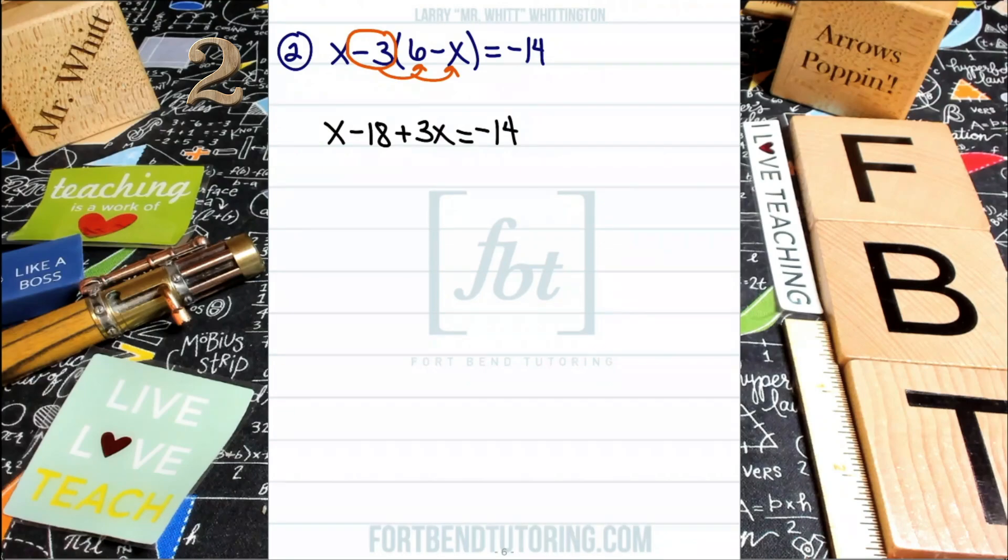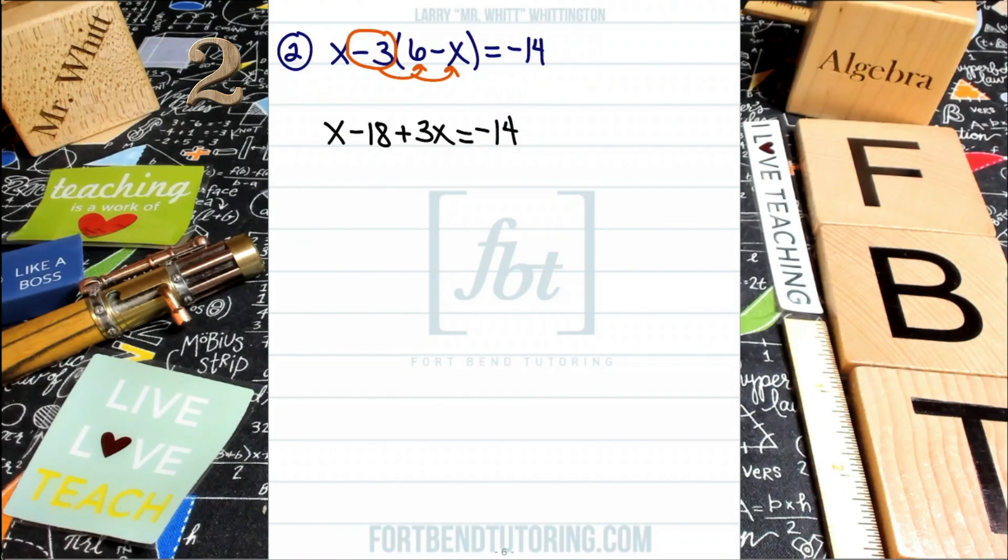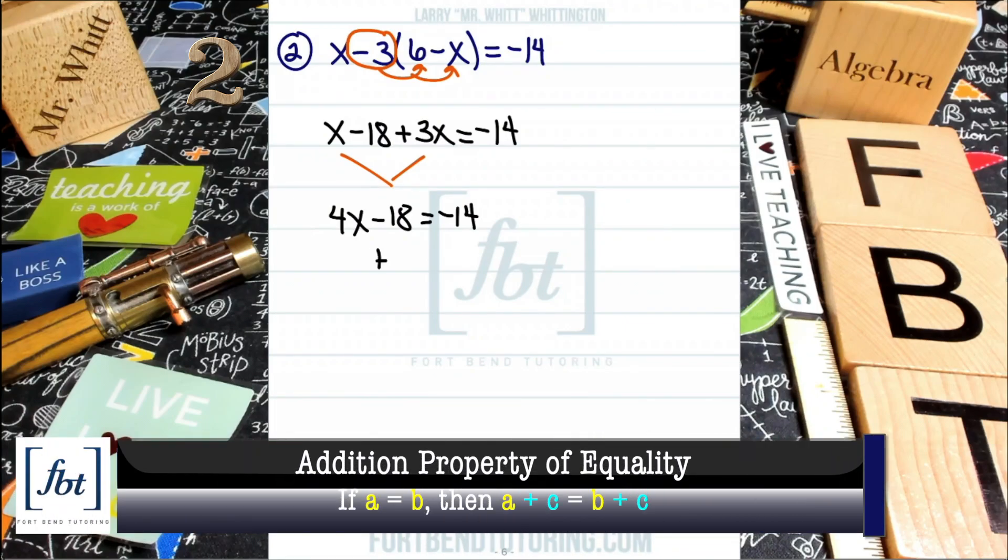So after you distribute, always go to the next step, looking for like terms. And that's exactly what I have. So I'll be combining the positive x and the positive 3x together to give me 4x minus 18, which equals negative 14. From here, we're looking at isolating the term 4x. We want to get that by itself. So I'm going to use the addition property of equality and add 18 to both sides of the equation.